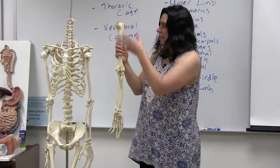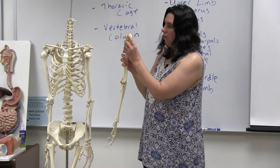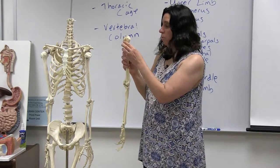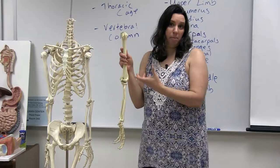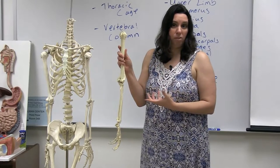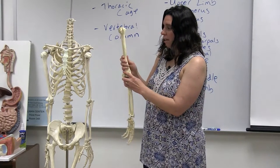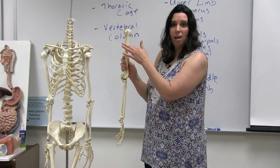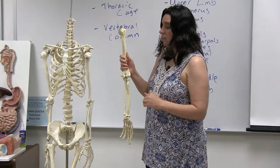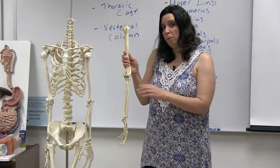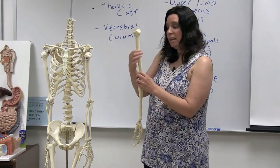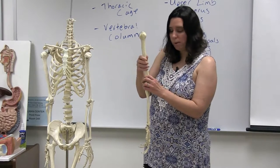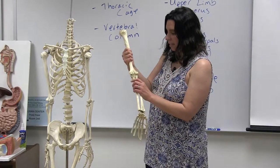Moving down, we've got the greater and lesser tubercle — these are attachment points for muscles you'll learn about later. There's also a rough area on the anterior side called the deltoid tuberosity, which is an attachment point for a muscle called the deltoid — that's how it gets its name.